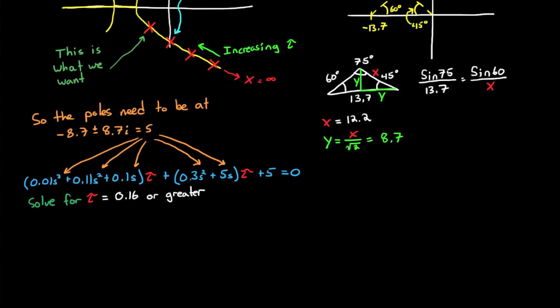Normally there would be no imaginary component. The reason why it exists here is that this isn't an exact pole location. This is an estimate from our root locus plot. So as long as your residual imaginary component is small, you know that you've picked a pole location that is very close to the real location.